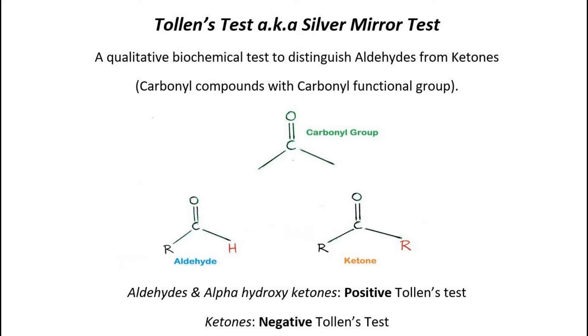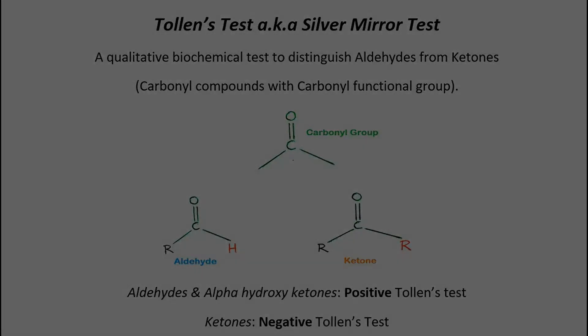Alpha hydroxy ketones, however, are an exception and give a positive test as well. The Tollens test is performed on a sample that had been confirmed to contain a carbonyl compound prior to this test.